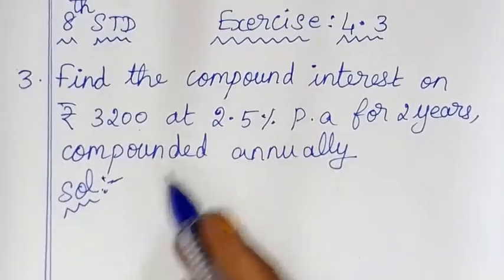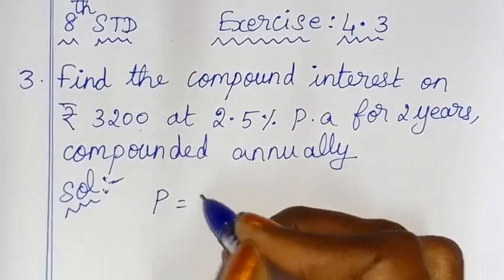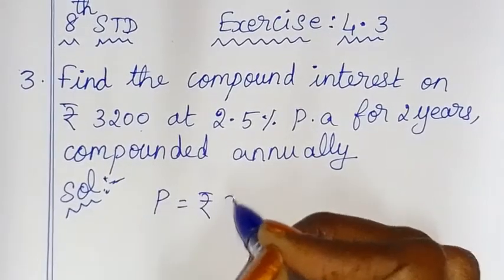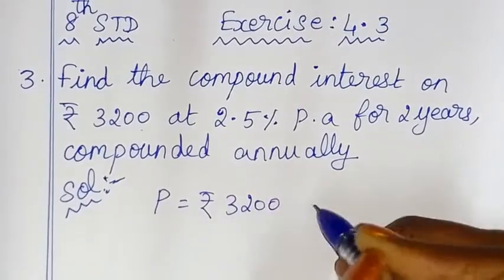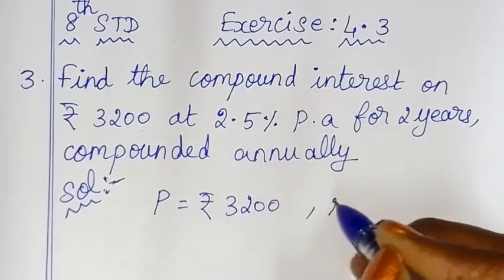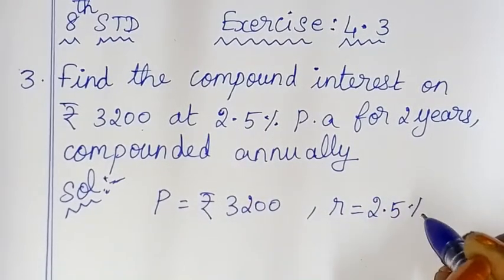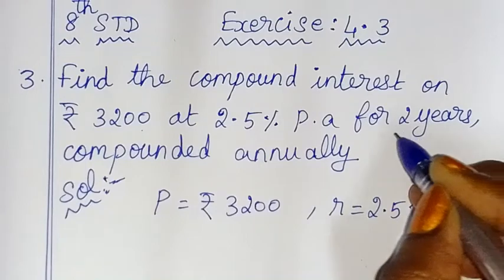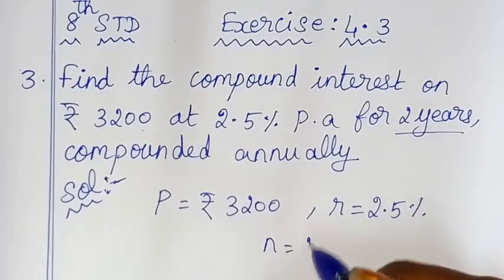First we put the values. Principal value P is equal to Rs.3200. Rate of interest R is equal to 2.5%. Number of years N is equal to 2 years.